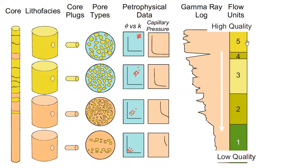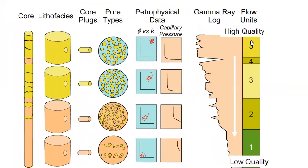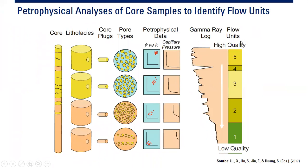Finally, we make the conclusion on flow units from high quality to the lowest quality. We have four or five classes — numbers four, three, two, and one — and numbers four and two are quite similar. You can say there are four or five types based on this analysis. This is very important because ultimately it will influence our reservoir simulation, where we will use porosity, permeability, and capillary pressure.